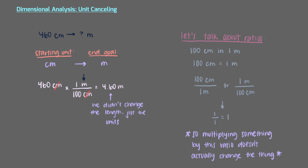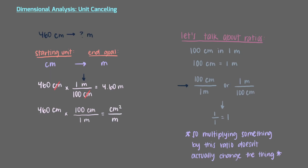But what would have happened if we used the other ratio we talked about? Well, let's look at the units. We wouldn't have been able to cancel out the centimeters. In fact, we would be multiplying centimeters by centimeters, and we would still have meters on the bottom. If we multiplied everything out, our units at the end would be centimeters squared over meters, which doesn't make any sense. This is why it's super important to pay attention to units when doing dimensional analysis problems.